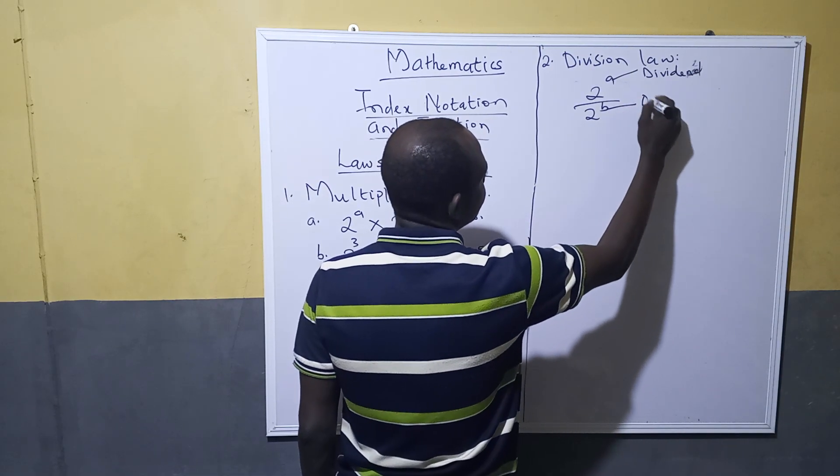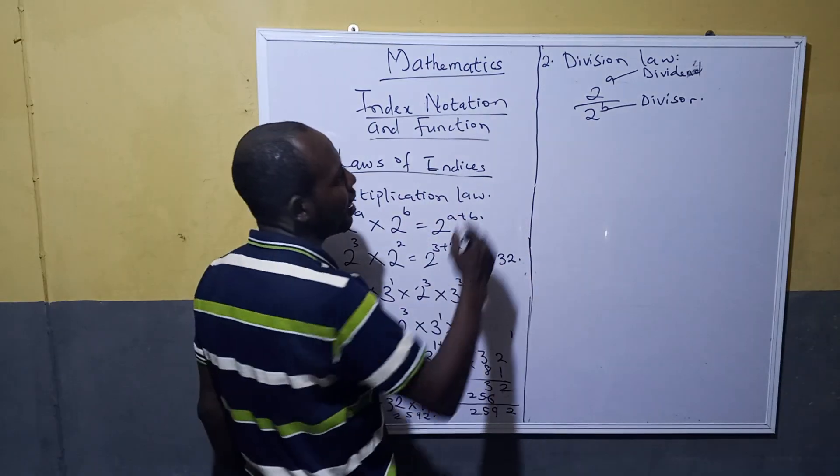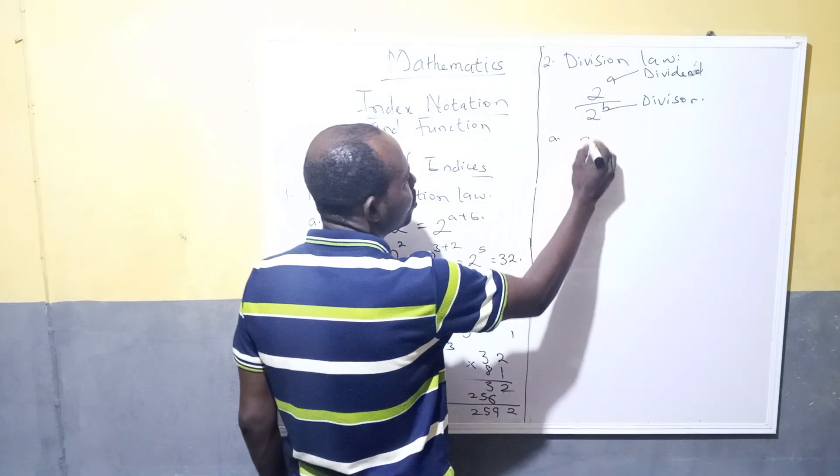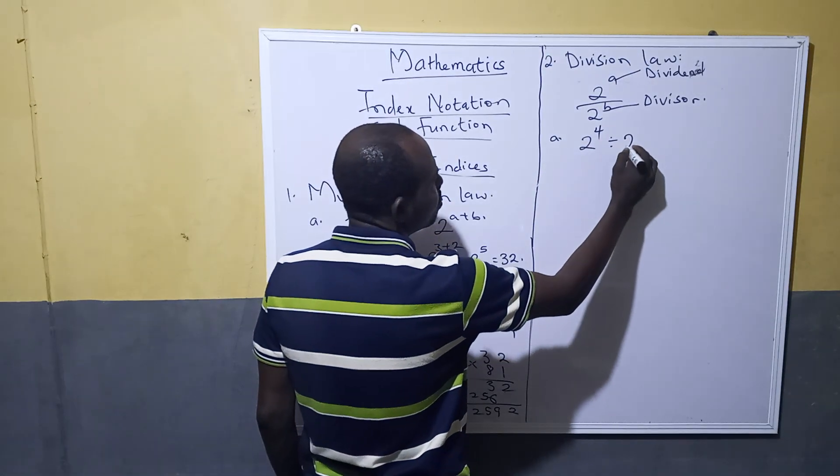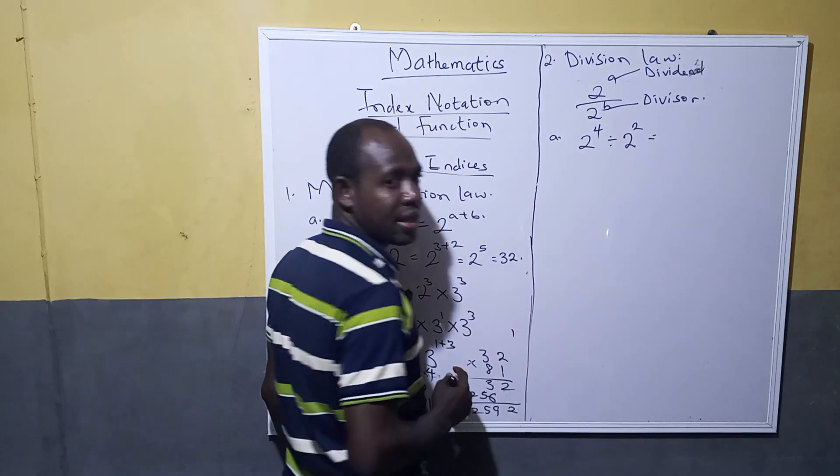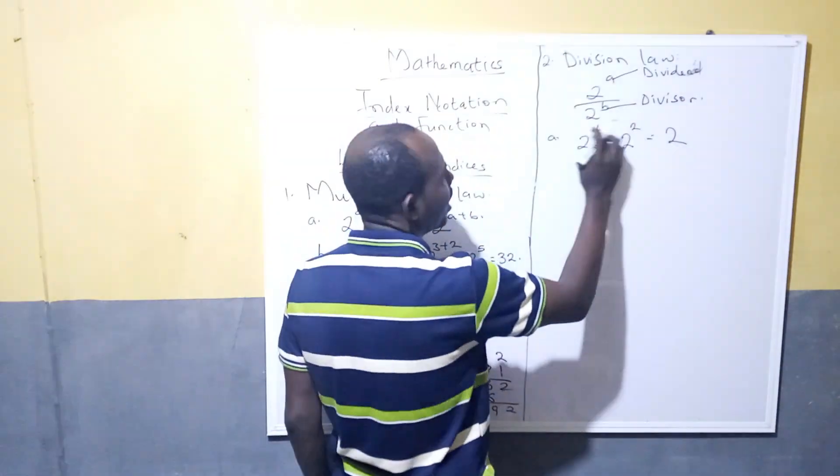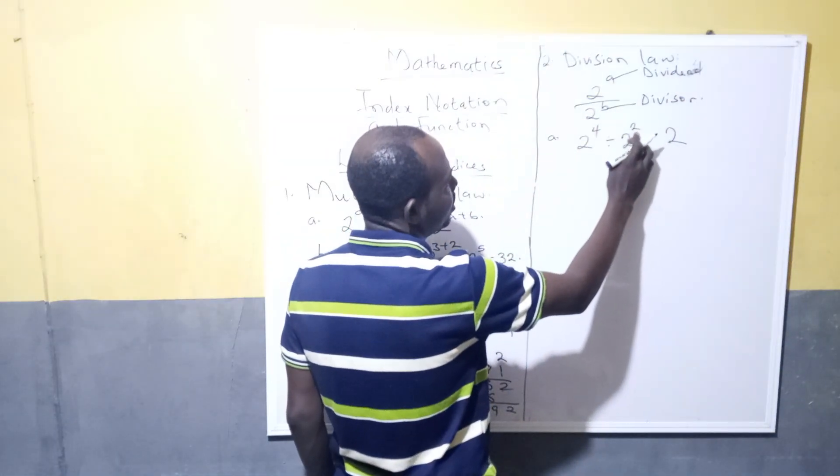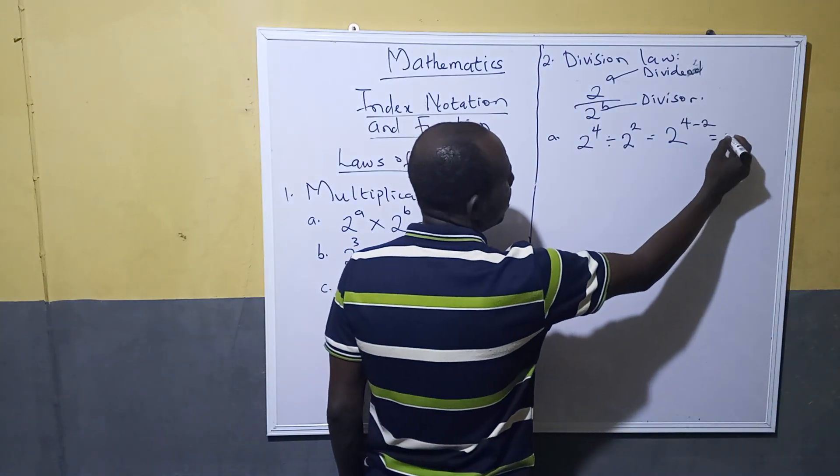So what I'm trying to say is that, for example, if you want to divide 2 raised to the power of 4 divided by 2 raised to the power of 2, it's simply taking one of the bases, 2, then subtract the divisor, which is 4 minus 2. Then you have 2 raised to the power of 2, equals to 4.